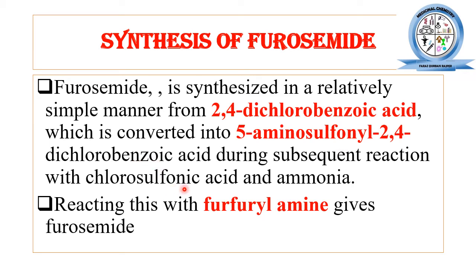When chlorosulfonic acid and ammonia are reacted with 2,4-dichlorobenzoic acid, it gets converted into 5-aminosulfonyl-2,4-dichlorobenzoic acid, which is the product of the first step. When this product is then reacted with furfurylamine, it gets converted into furosemide, our desired loop diuretic product.